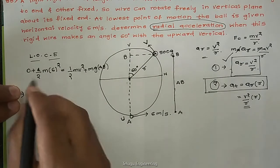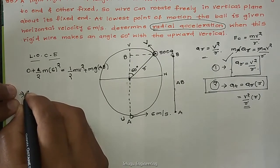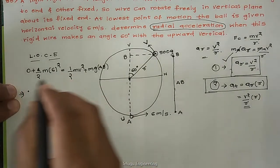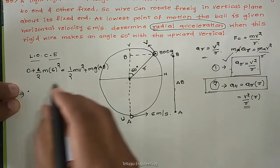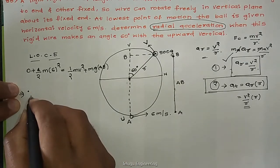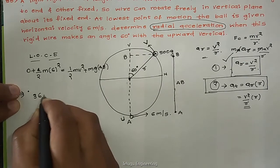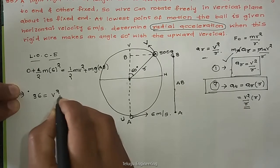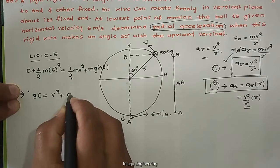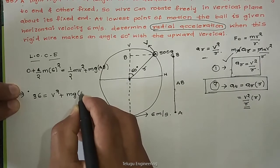Mass is common on all sides, so we cancel mass and multiply both sides by 2. This gives us 36 equals v squared plus 2g times the height AB. Now our main task is to find the height AB and substitute it into this equation.